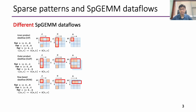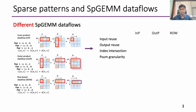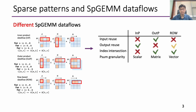In inner product data flow, a row of matrix A and a column of matrix B are dot-produced to get a scalar element in the output. In outer product data flow, a column of A and a row of matrix B are cross-produced to get a partial sum matrix. In row-based data flow, a scalar of A is broadcasted and multiplied with a row of B to produce a partial sum row. These data flows have different performances in terms of data reuse, index intersection, and partial sum granularity.